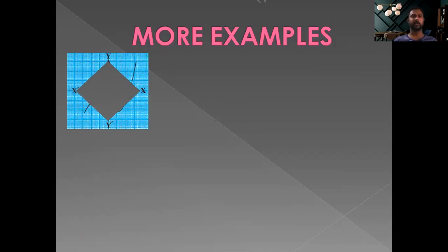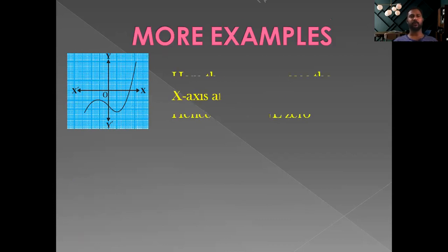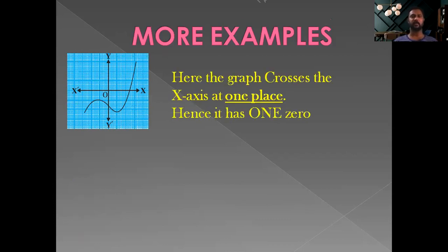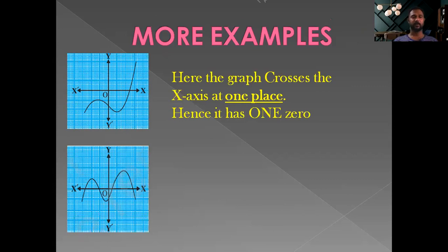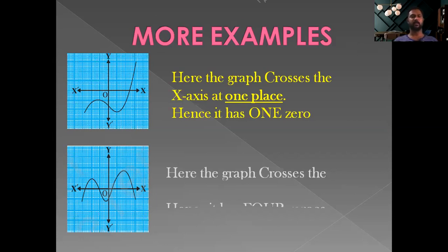Consider another graph where it clearly crosses the x-axis at one place — hence the polynomial has one zero. In another graph, the curve crosses the x-axis at four places, so that polynomial has four zeros.